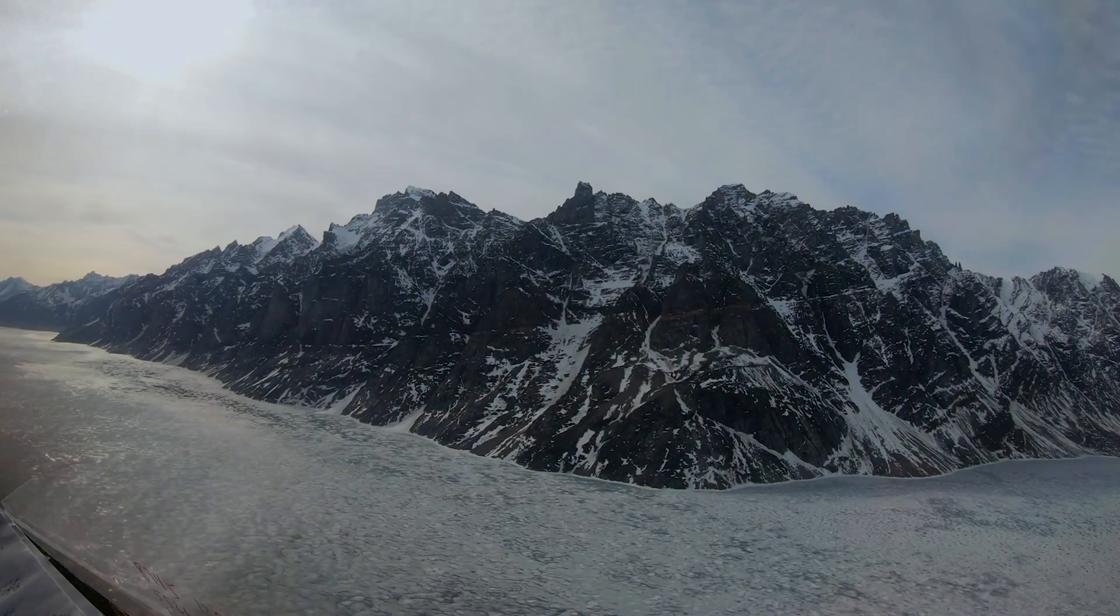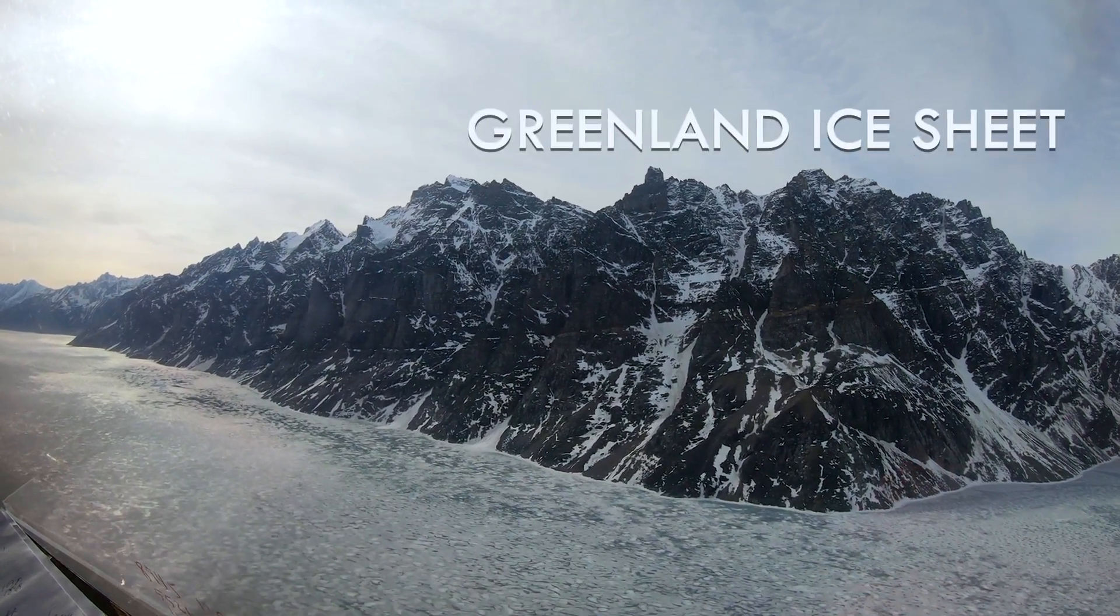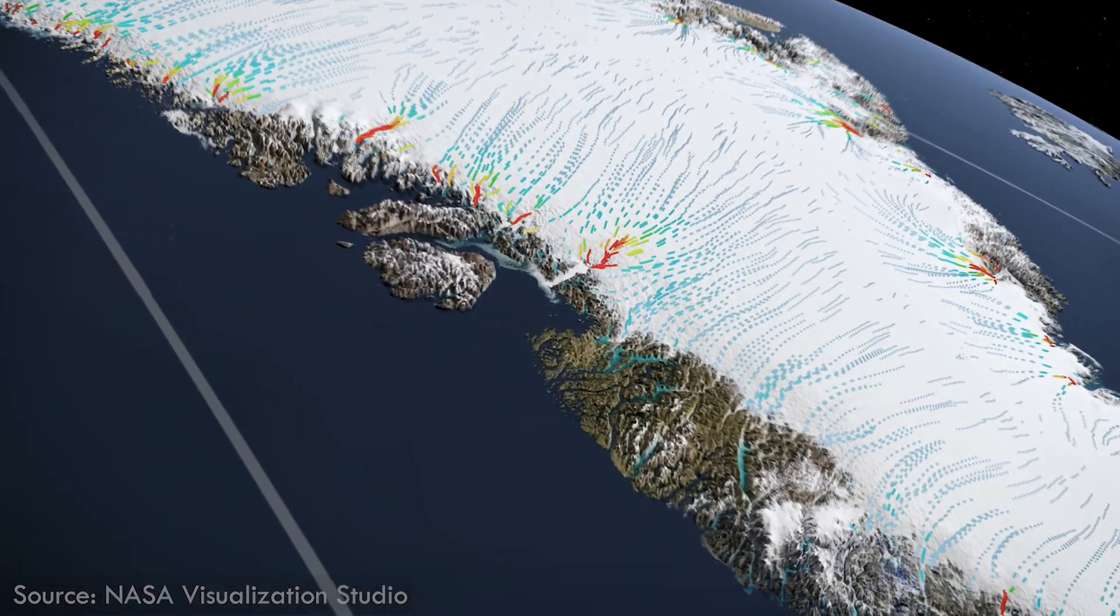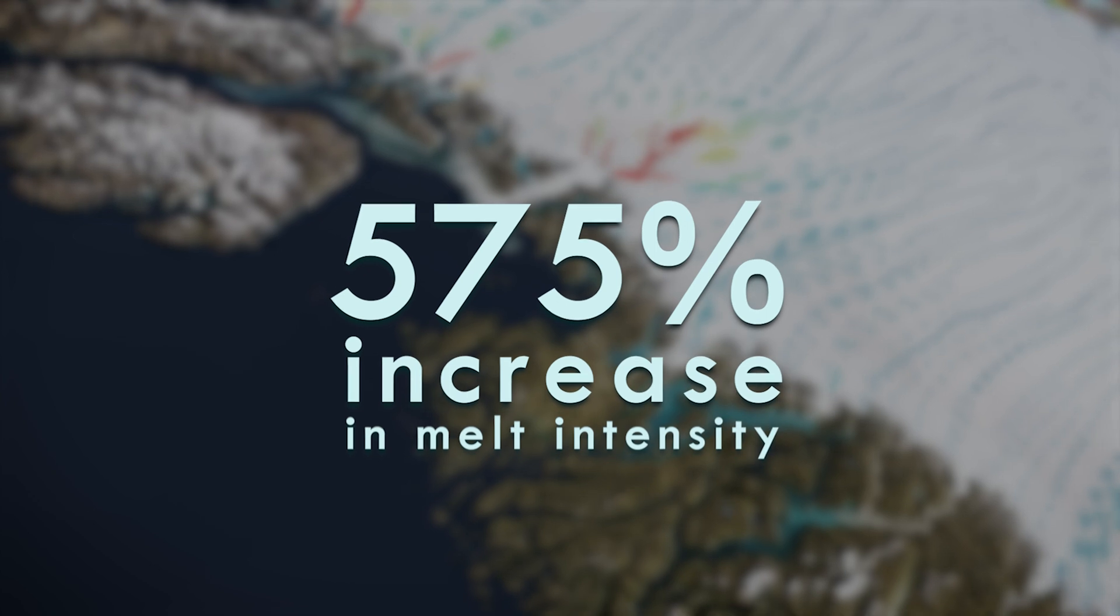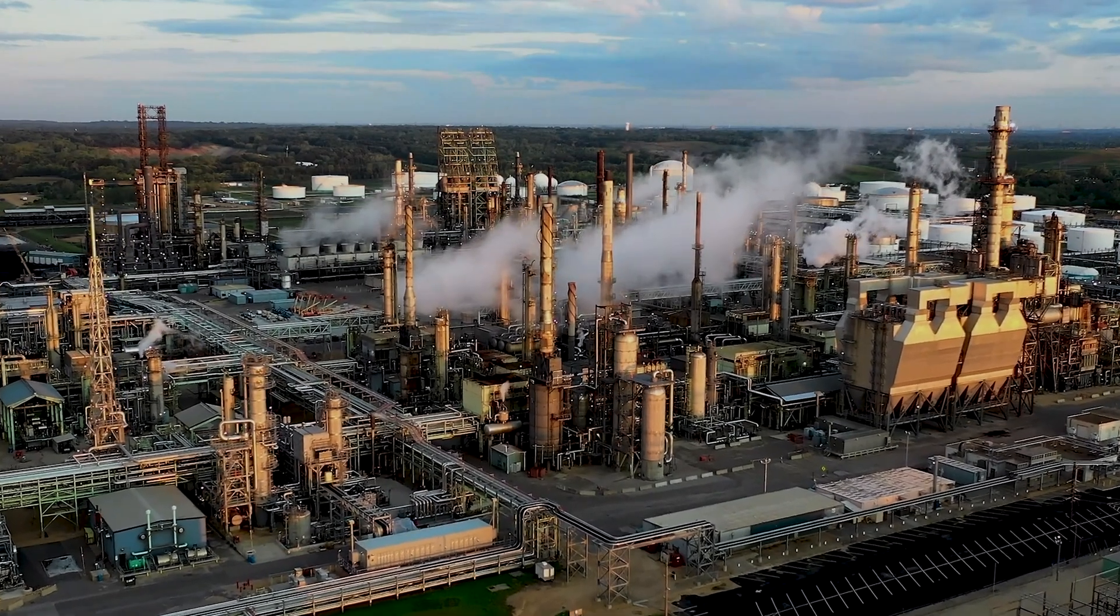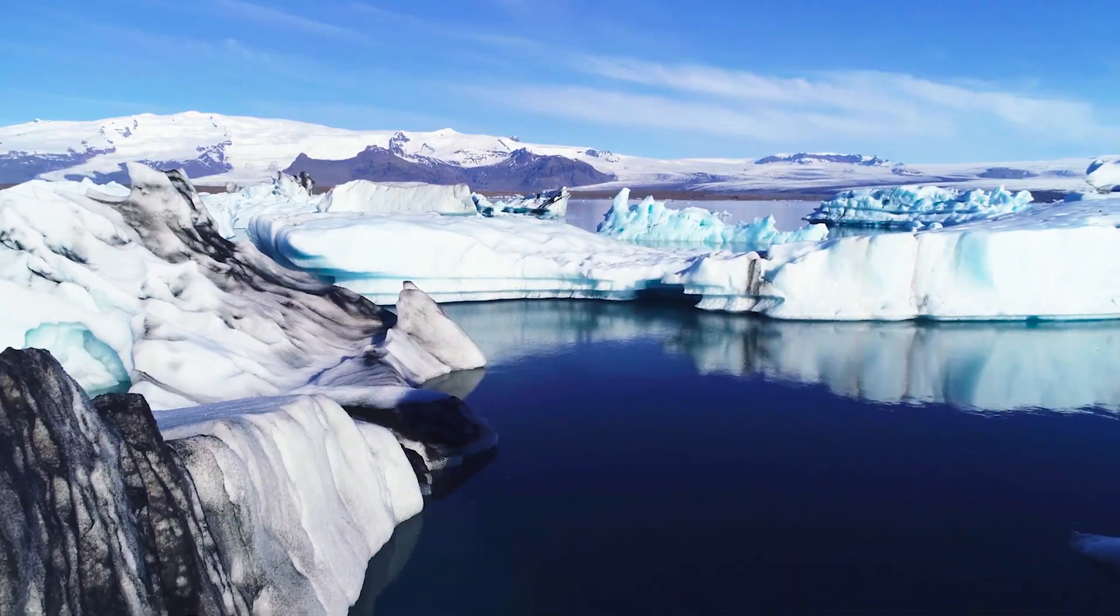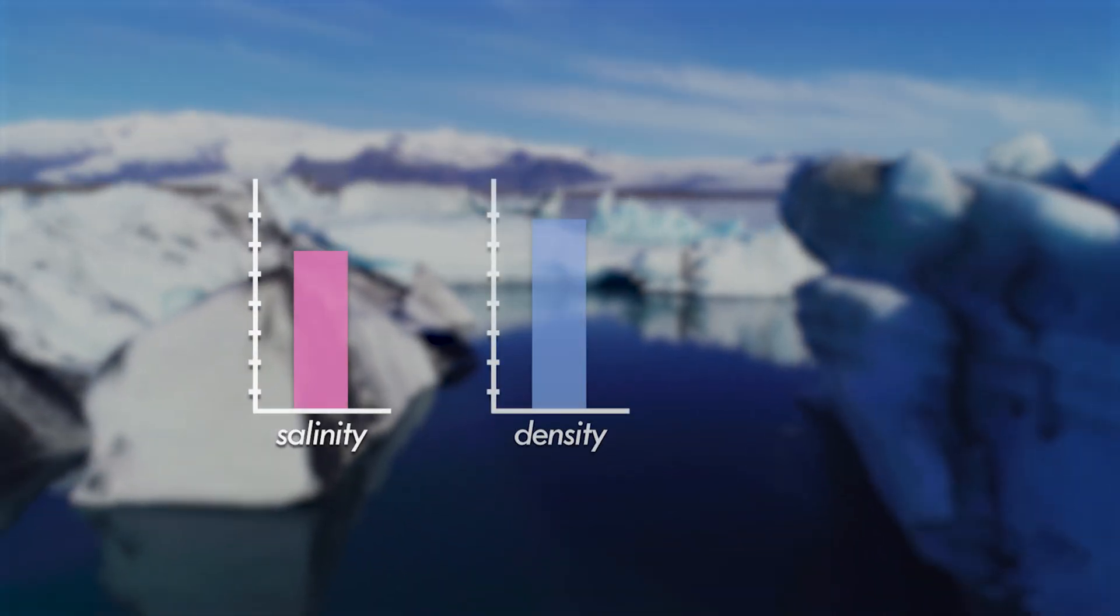One region in the Atlantic that has experienced a rapid increase in melting is the Greenland ice sheet. Research on Greenland ice cores have found that melting intensity in central-west Greenland has increased 575% compared to pre-industrial levels as a result of a warmer planet. All of this fresh meltwater flows directly into the Atlantic Ocean, causing the water to drop in salt content and therefore drop in density.